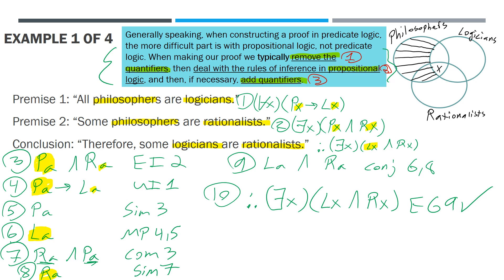Notice that the first thing we did was remove the quantifiers, then we used the standard rules of propositional logic, and then finally we added our quantifier. Another way to check that this argument is valid is using Aristotelian scholastic logic — you can make a checklist of rules of quality, quantity, and distribution, and verify the argument meets all requirements. But that's a whole other story. In any case, it's a good argument.